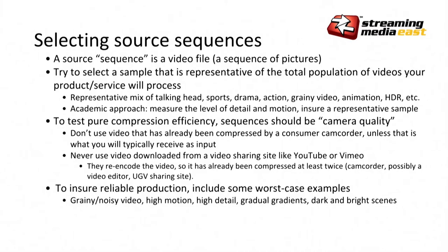To design your test, one of the first things you'll have to choose is what video to use. We call those source sequences. You'll want that basket to be representative of the total population of video your service will encode — the whole variety. You may have talking head video like news, sports, dramatic movies, action, grainy or noisy video, easy-to-encode cell animation. You'll want the right selection of clips in your test to represent all those things.